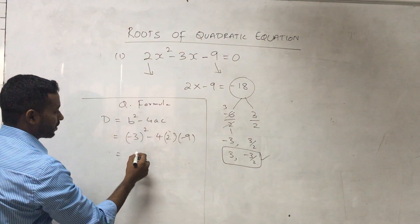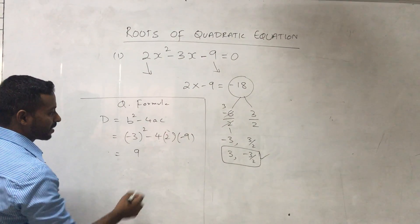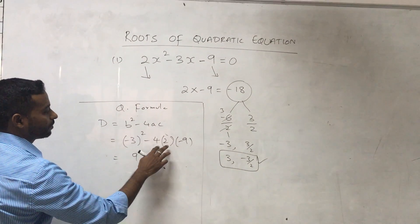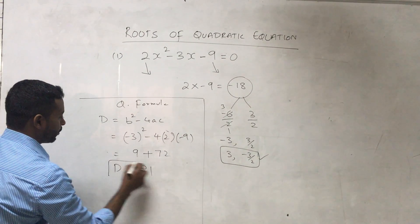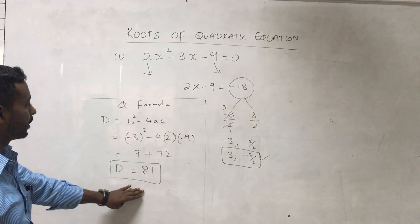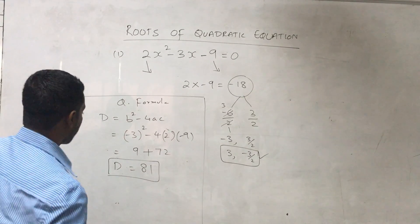Get the value: -3 times 3 gives plus 9, minus of minus is positive, 4 times 2 is 8, 8 times 9 is 72. So my discriminant value is 81, and I'm going to use it in the quadratic formula.